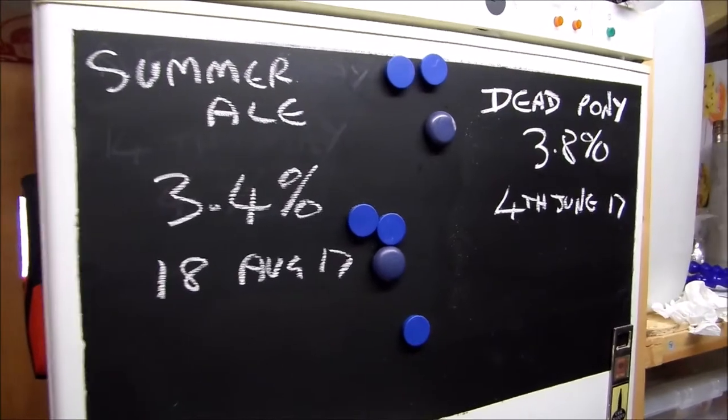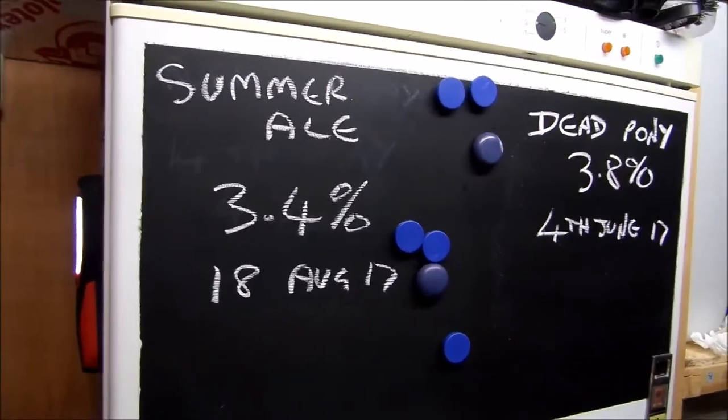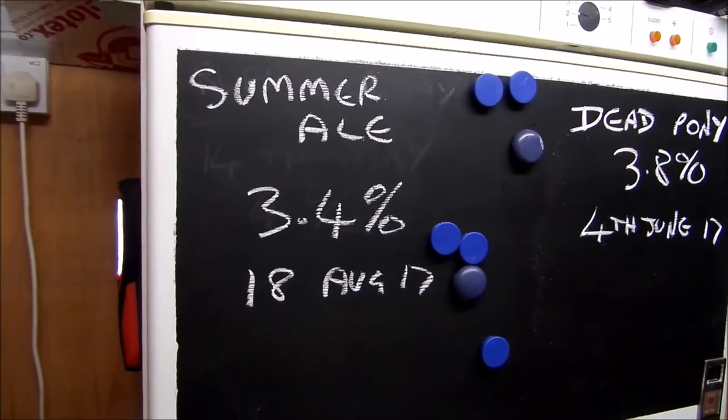Now before we start playing with electric, it's time for a beer. So the summer air, which I did with last brew day, efficiency was really crap. I've got 3.4, don't know what's going on there.